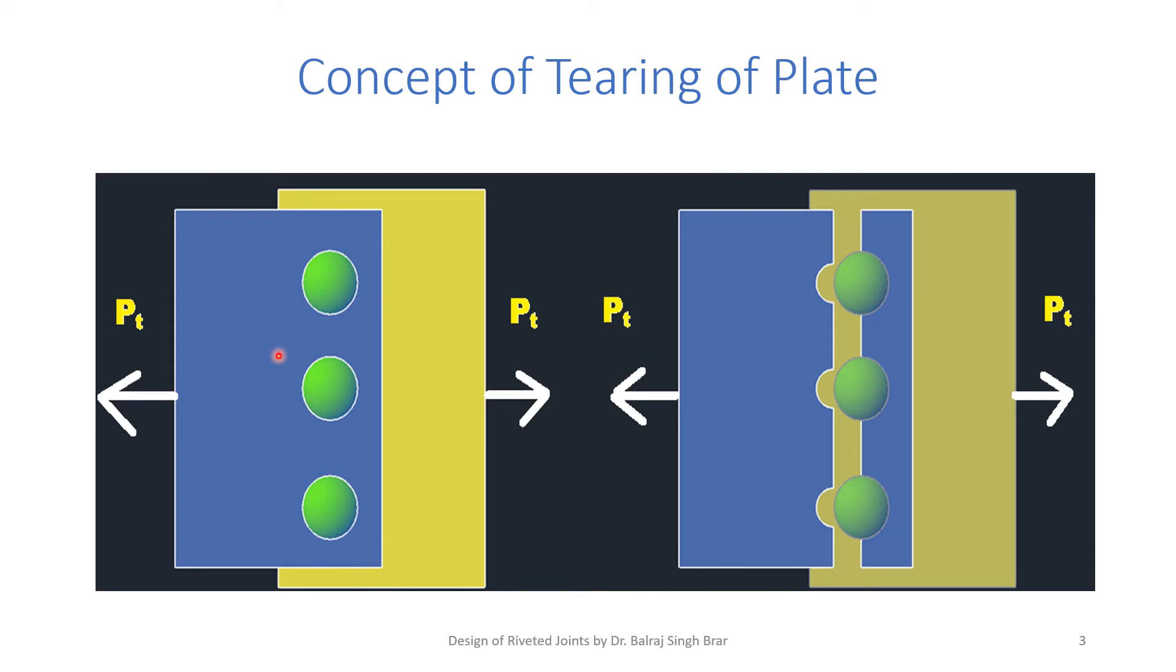Now suppose this single riveted lap joint is subjected to a tensile load Pt on both the plates, and if the plates are of poor strength or the joint is poorly designed, then plates may get torn.